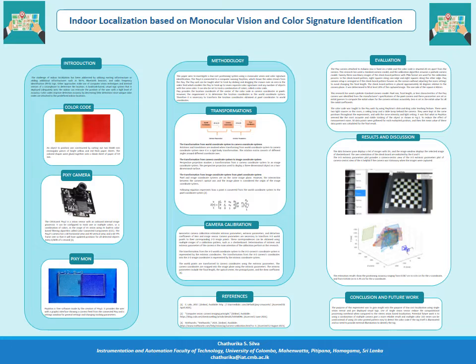It is essential to know the internal and external parameters to model an imaging system. Calibration is a technique to obtain internal and external parameters necessary for coordinate transformations. Determination of the parameters of the camera using multiple images of a checkerboard pattern is the main intention of the calibration performed in this research.